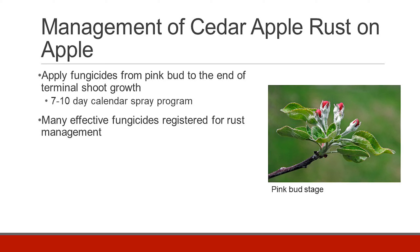To manage cedar apple rust on apples, fungicides are recommended. Fungicides are applied from the pink bud stage to the end of the terminal shoot growth stage, which corresponds to the second cover spray or first summer spray applied to control summer apple diseases. Similar to other early season apple diseases, there are many effective fungicides registered for cedar apple rust control on apple, and these should be applied on a 7 to 10 day schedule or a calendar spray program.